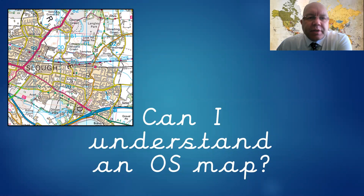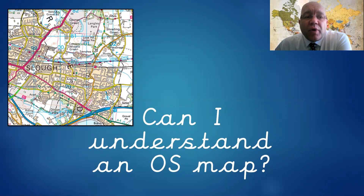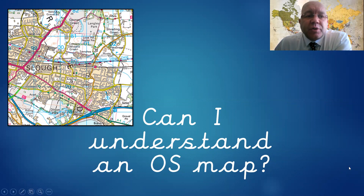Hello, lovelies, and welcome to today's wider curriculum lesson on map reading. We're going to wrap up the last couple of weeks by asking you the question: can I understand an OS map? Remember, OS stood for Ordnance Survey, and that's the organisation that creates maps of the whole of the UK. Over the last couple of weeks, we've looked at various symbols, contour lines, roads, all sorts of things they use to recreate our landscape in map form. I'm going to bring it all together today.